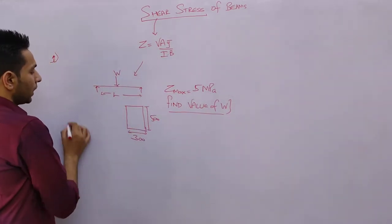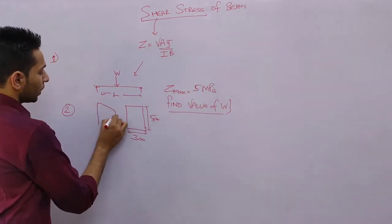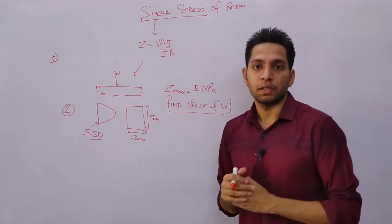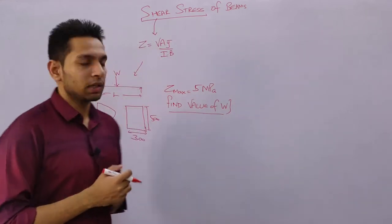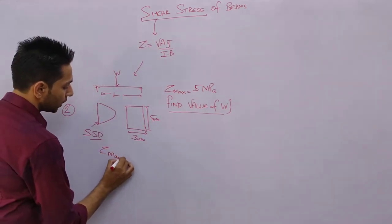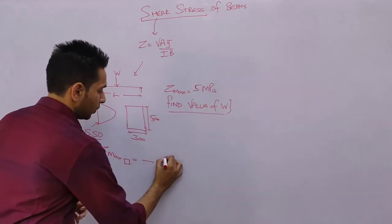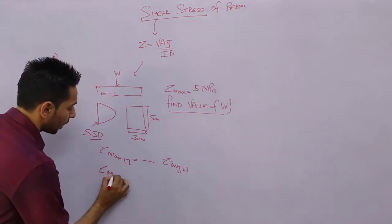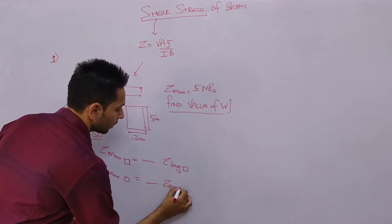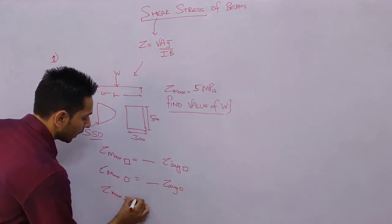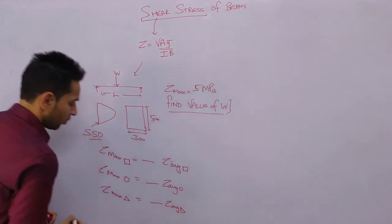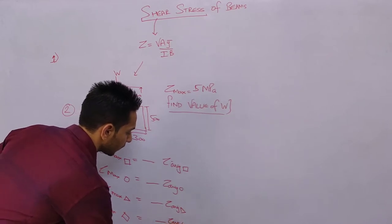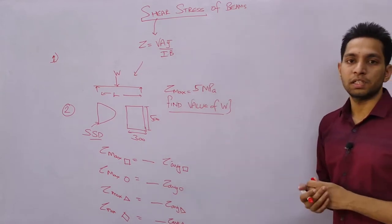The second type of question is related to shear stress distribution. You are asked: what is the maximum value of shear stress compared to the average stress for various sections? For example, calculate tau_max to tau_average for a circular section, tau_max to tau_average for a triangular section, or tau_max to tau_average for a diamond section. These are the kinds of questions asked from this part.